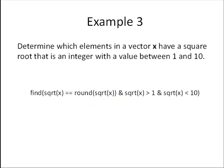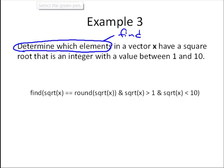Let's try another example. Determine which elements in a vector x have a square root that is an integer with a value between 1 and 10. We're going to determine which elements, so that tells us to use the find command. What we'll do is first find where the square root equals an integer. Here we take the square root and use the same test as before.